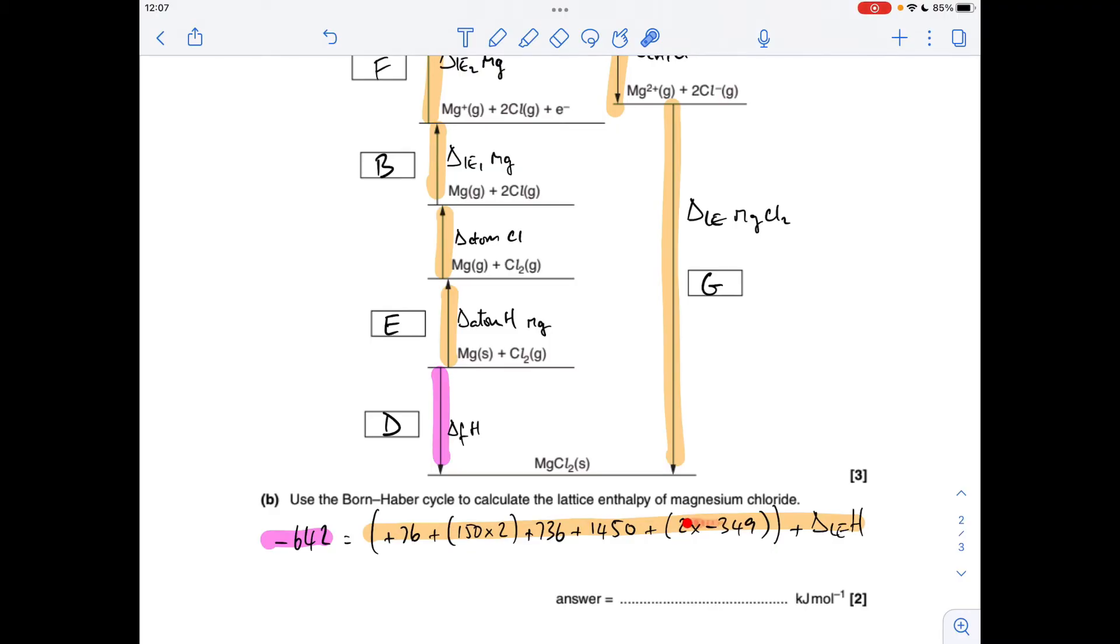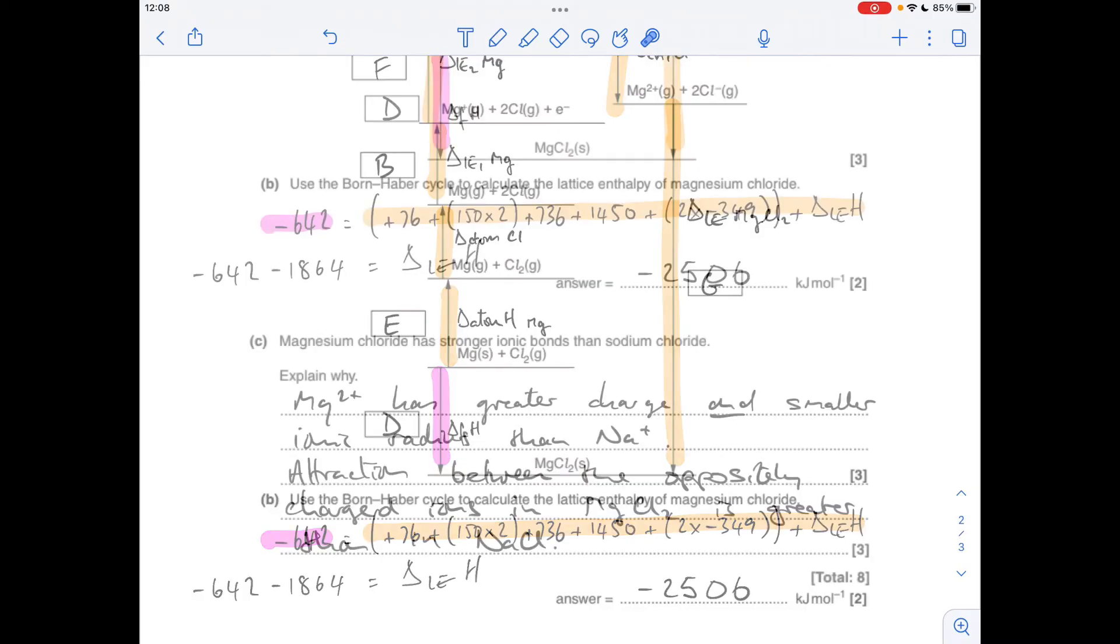So if we work out what's in the bracket and then take it over to the other side, flip its sign, that'll give us the lattice enthalpy, which comes out at minus 2506 kilojoules per mole.